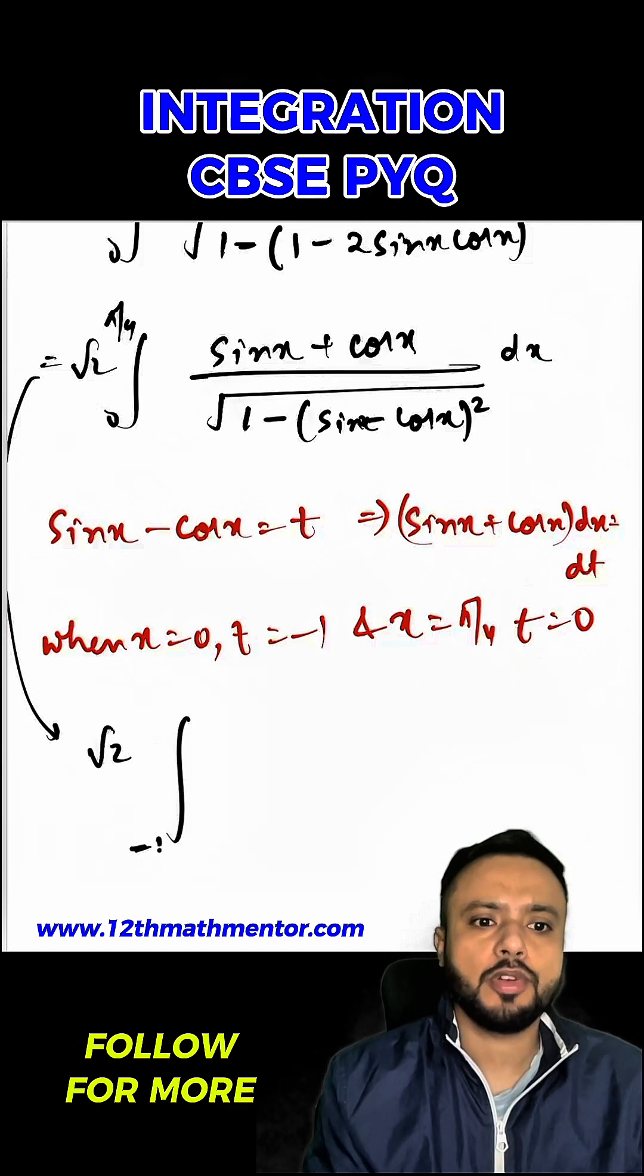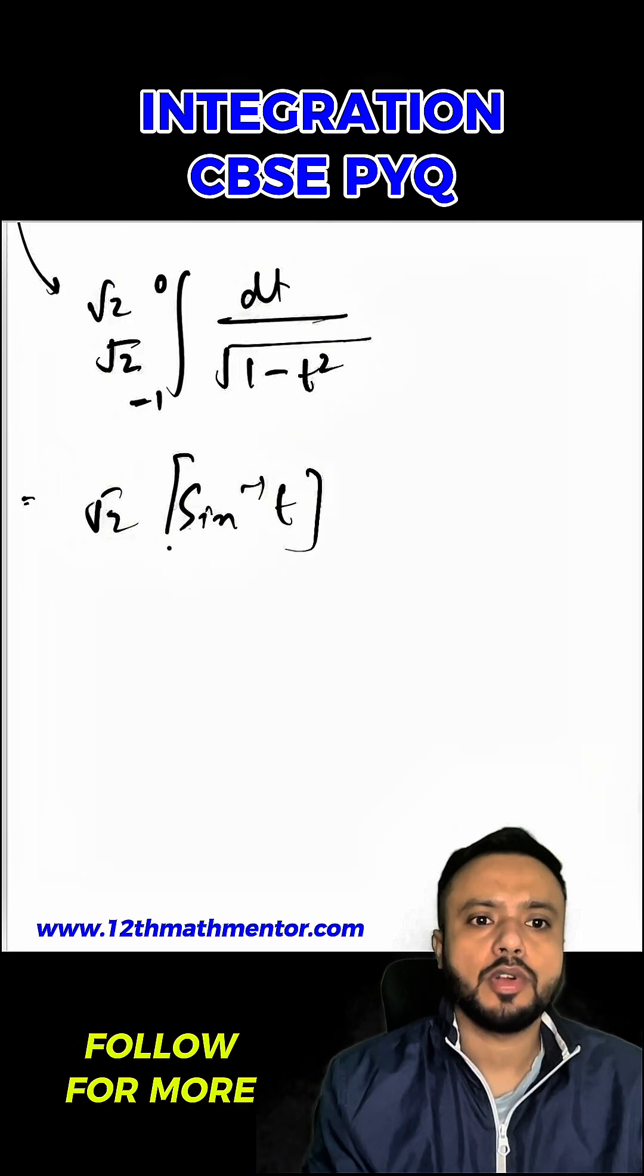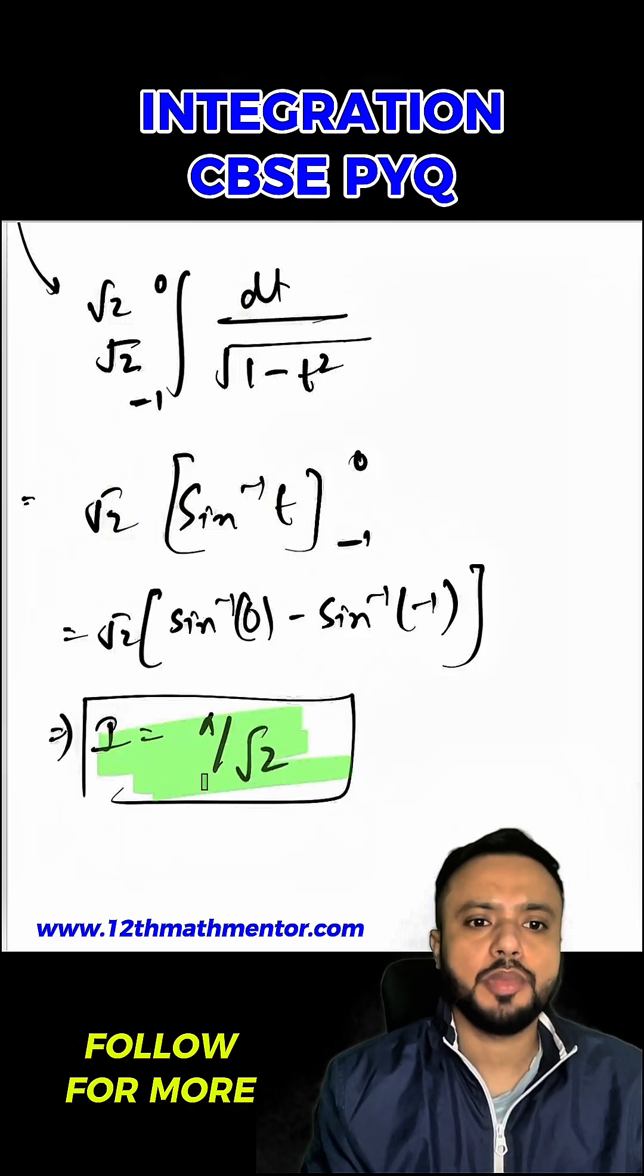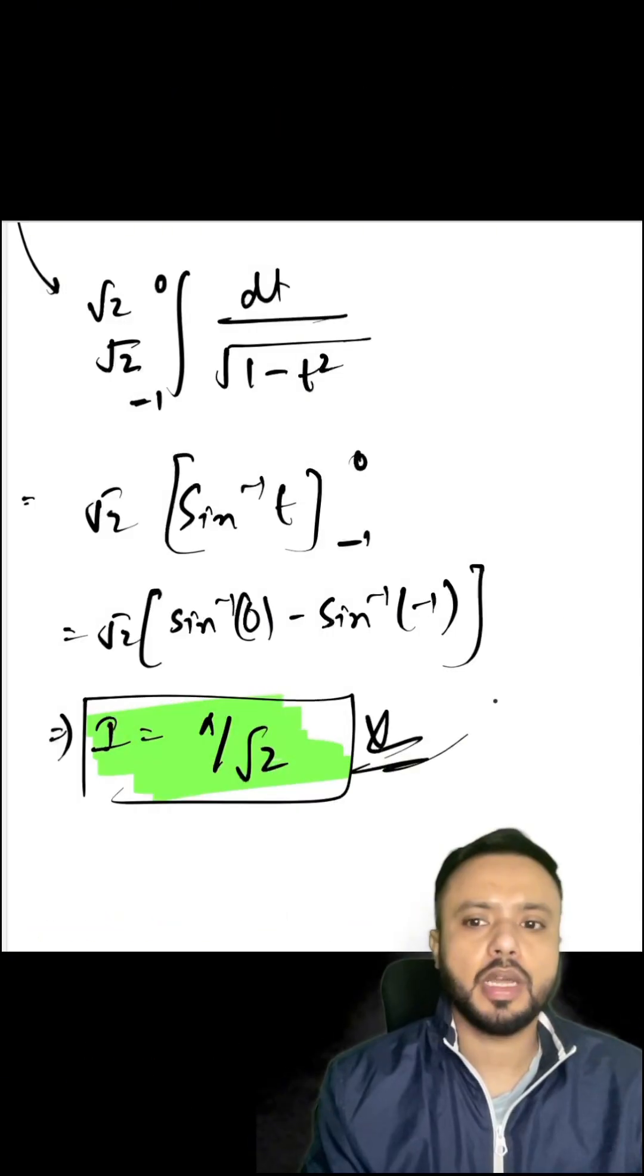So I will write this integral in terms of t as root 2, so new limits would be from minus 1 to 0, dt upon root of 1 minus t square. So it would be root 2 sine inverse t from minus 1 to 0. So after substituting the limit, I'll get I equal to pi upon root 2. This is my desired answer.